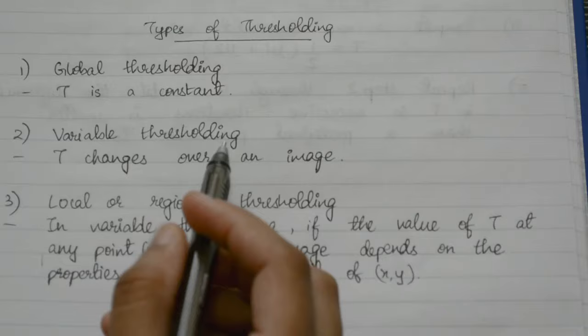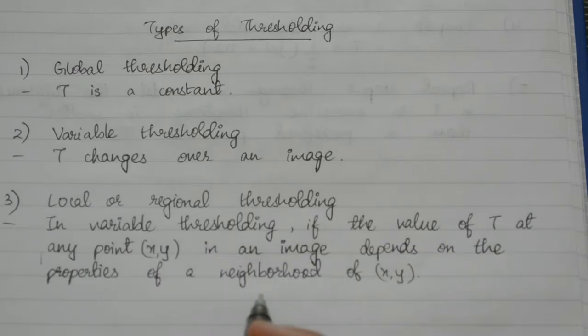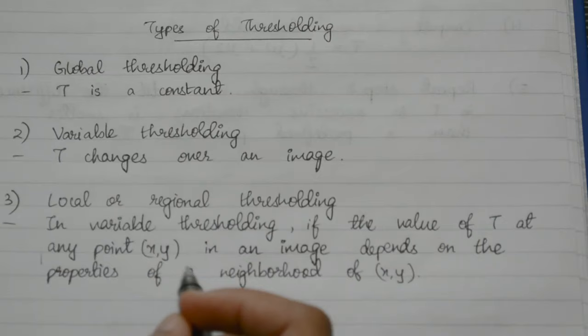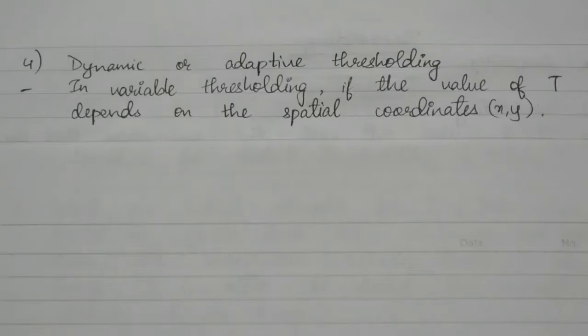Under variable thresholding, if the value of t at any point x, y in an image depends on the properties of a neighborhood of x, y, then it is known as local or regional thresholding. Also under variable thresholding, if the value of t depends on the spatial coordinates x, y, then it is known as dynamic or adaptive thresholding.